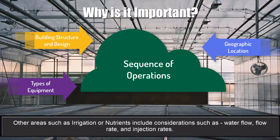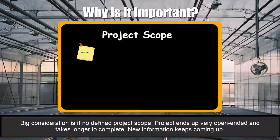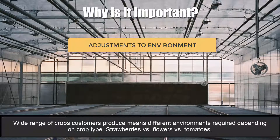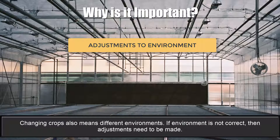Other specific areas such as irrigation or nutrients include considerations like water flow, flow rate, and injection rates. A big consideration is if there's no defined project scope — the project ends up very open-ended and takes much longer to complete since new information keeps coming up during the process with Argus. Also, with the wide range of crops that customers are producing, a different environment is required depending on the crop type — for example, strawberries versus flowers or tomatoes. This can be a problem if a customer changes their crop, and if the environment is not correct then adjustments need to be made.